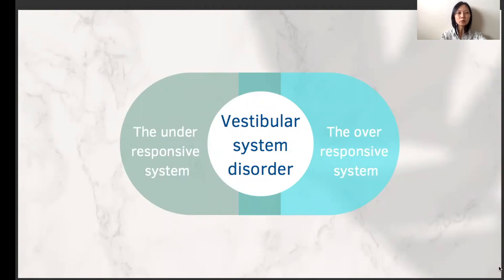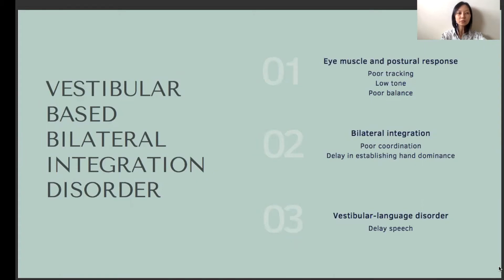There are two main things that might go wrong with the vestibular system: the system might under-respond or over-respond to vestibular inputs. When the vestibular input is not perceived accurately, neither the vestibular input nor the input from other senses can be used easily to produce adaptive responses. An under-responsive vestibular system produces a vestibular-based bilateral integration problem. The symptoms of this disorder are very subtle. Children with this problem usually have average or above-average IQ, and their problems are often not detected until they enter primary school and have problems with reading, writing, and mathematics. They usually do not improve with traditional educational support such as tutoring.